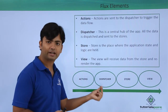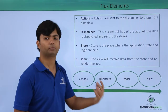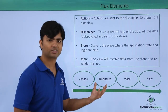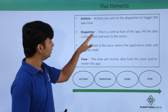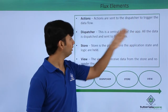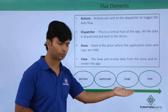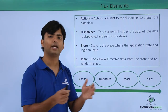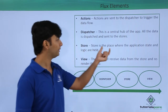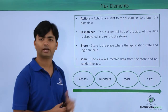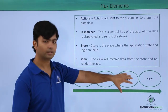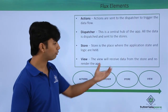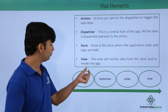The dispatcher will dispatch the data — it is the central hub of the app. All the data is dispatched and sent to the store. The store is where you put all the logical implementation — it is where the application state and logic reside. The major part of your application will be residing here. Once data reaches the store, it forwards the data to the user interface, which is the view.